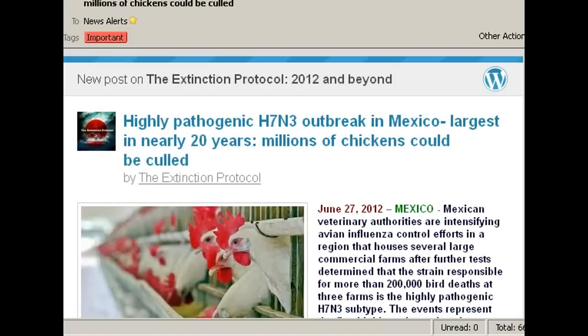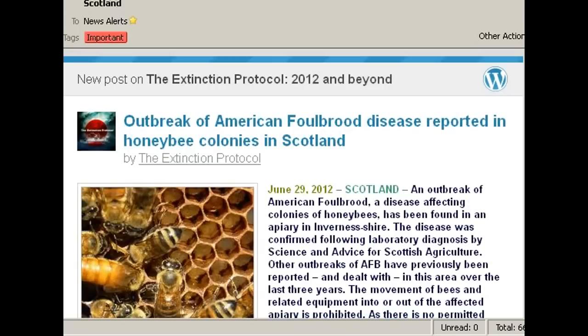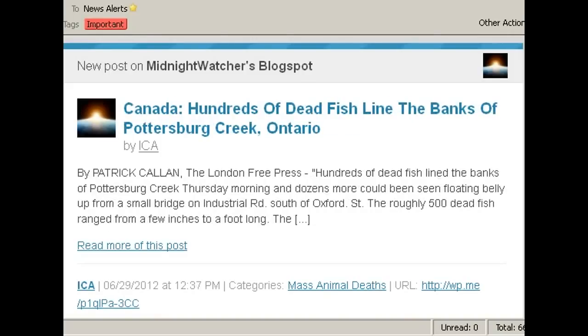Highly pathogenic H7N3 outbreak in Mexico, largest in nearly 20 years, millions of chickens could be culled. Livestock disease with 86% mortality called worst epidemic in a decade, 1.6 million goats and sheep at risk. Outbreak of American foulbrood disease reported in honeybee colonies in Scotland. Large quantities of dead fish have been seen flowing downstream all day. That's in Ireland. Hundreds of dead fish line the banks of Pottersburg Creek, Ontario.